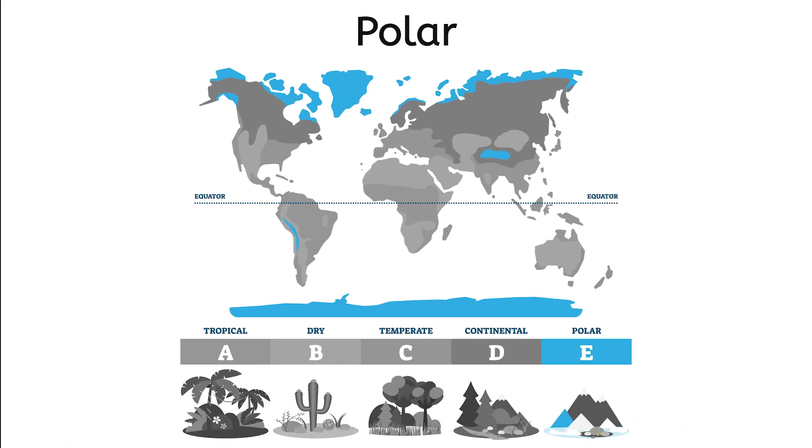And lastly, we arrive at the poles. Polar climates are extremely cold. When you think polar, you probably think snowy. But polar climates actually have very little precipitation. So why is there snow on the ground? Well, the little snow that does fall never melts.